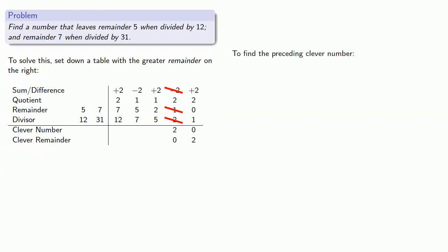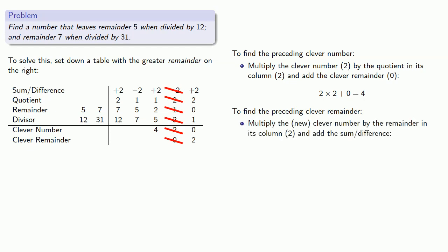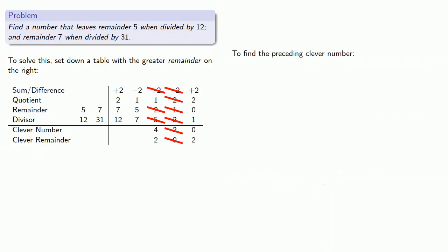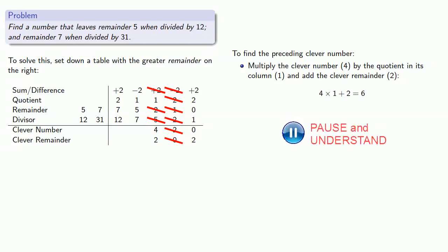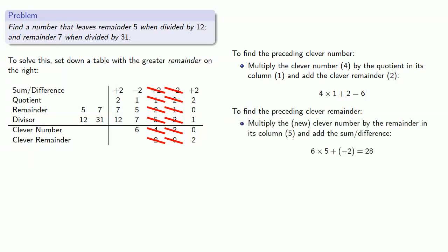Going back another step: to find the preceding clever number, we multiply our clever number, 2, by the quotient in the column, also 2, and add the clever remainder. The clever number, the quotient, and the clever remainder are the only numbers in the column we haven't used. We find the preceding clever remainder by multiplying our new clever number by the remainder in its column, adding the sum or difference, then dividing by the divisor. Our next clever remainder is 2. Once more: to find the preceding clever number, we multiply our clever number, 4, by the quotient in its column, 1, then add the clever remainder. We find the preceding clever remainder by multiplying the new clever number by the remainder in its column, adding the sum or difference, then dividing by the divisor.